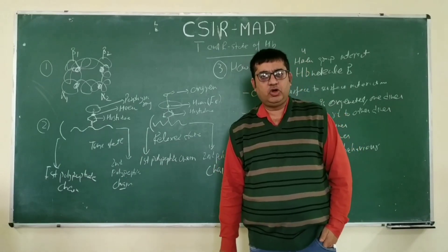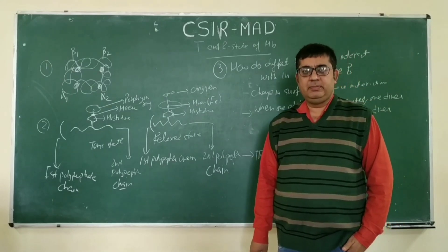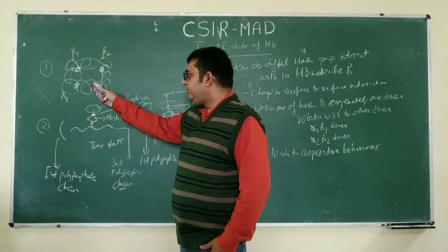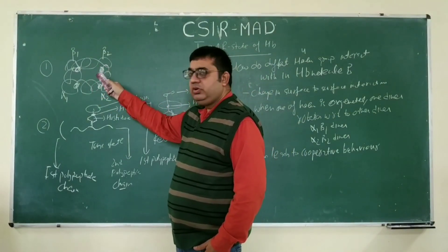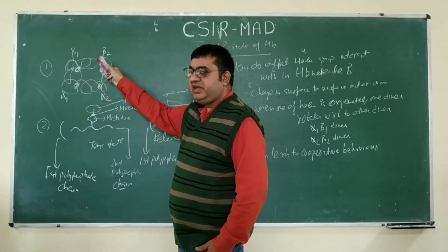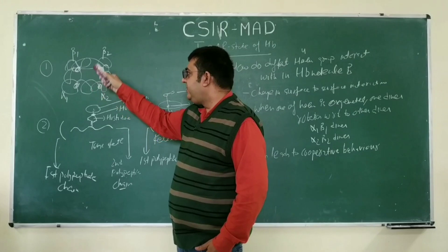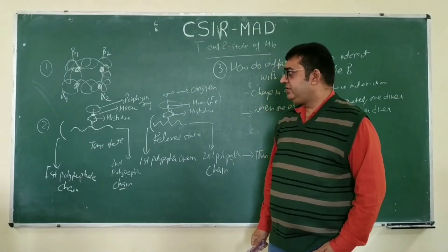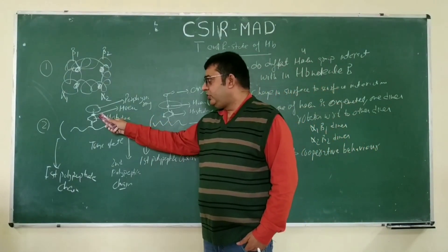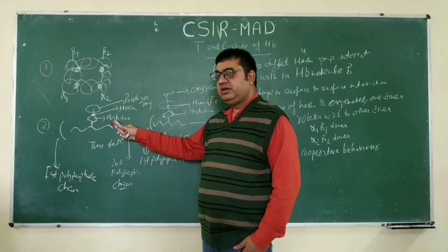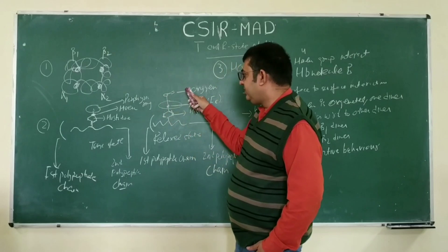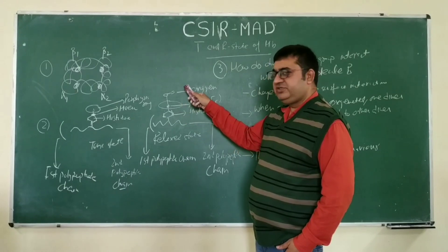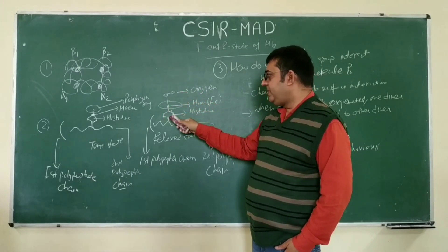Good evening friends, today we are going to talk about the cooperative behavior of the hemoglobin molecule. This hemoglobin molecule is made up of four polypeptide chains: beta1, beta2, alpha1, and alpha2. We can see this hemoglobin molecule as an alpha1-beta1 and alpha2-beta2 dimer. When one oxygen molecule binds to one of the polypeptide chains, it pulls the heme or iron group upward, and there is a change in electrostatic interaction between the two polypeptide chains.